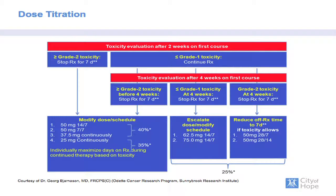A study by my colleague Dr. Bjarnson at Sunnybrook is an innovative trial running at 11 centers with 56 patients enrolled. Patients are randomized to varying schedules of sunitinib therapy, and those who don't incur toxicity may be titrated upwards to 75 mg on a 14-day on, 7-day off schedule.